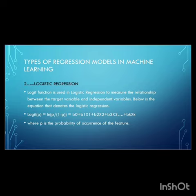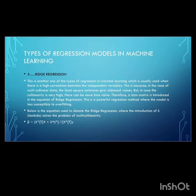The second one is logistic regression. The logit function is used in logistic regression to measure the relationship between the target variable and independent variables. The third one is ridge regression. This is another type of regression in machine learning which is